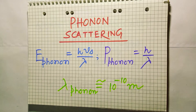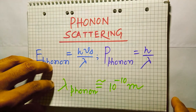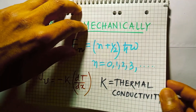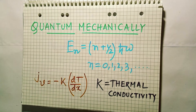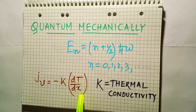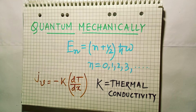Quantum mechanically, the phonon energy is quantized. Its movement can be taken as a simple harmonic oscillator of classical frequency omega. So we can write that quantum mechanically the energy of the phonon is: E_n = (n + 1/2) × h-cross × omega, where n equals 0, 1, 2, 3, and so on. The study of phonons plays an important role when discussing the thermal conductivity of a material. We can see it from the equation J_V = −K · dT/dH, where K is the thermal conductivity and J_V is the flux of thermal energy.